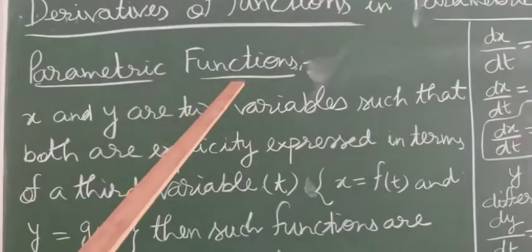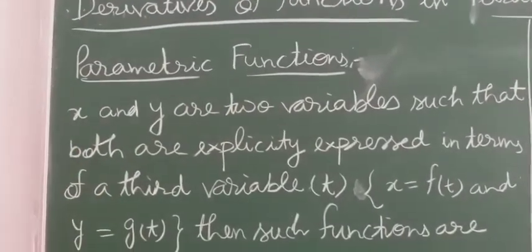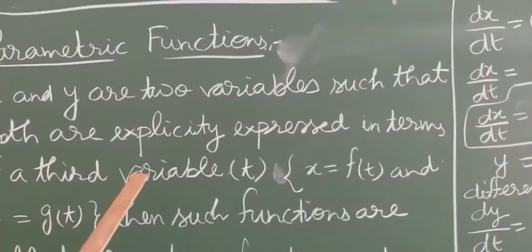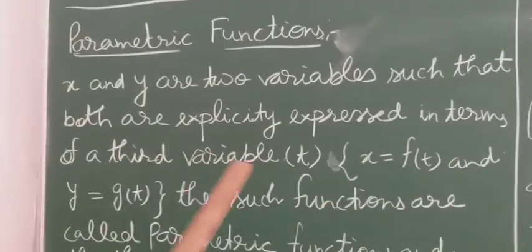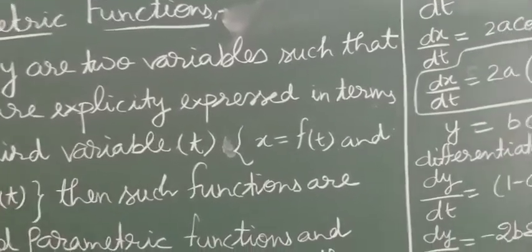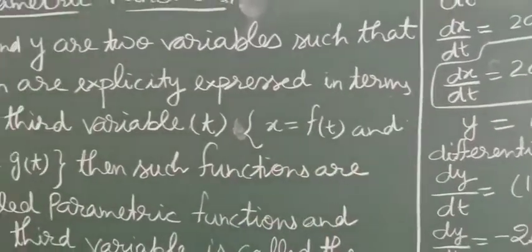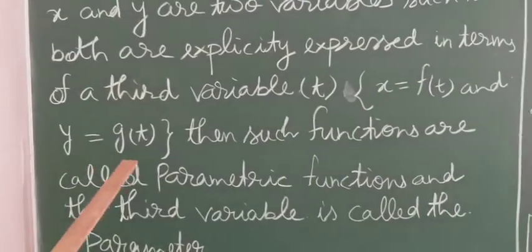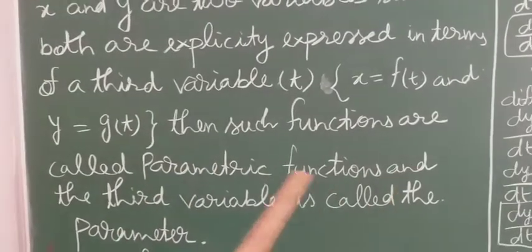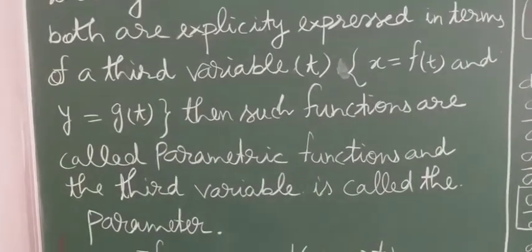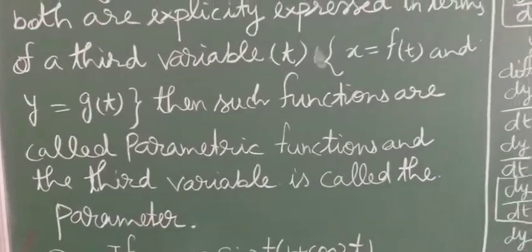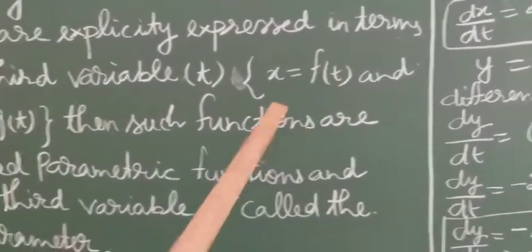A parametric function is when there are two main variables, x and y, and both are explicitly expressed in terms of a third variable. For example, x equals f(t) and y equals g(t). Such functions are called parametric functions, and the third variable t is called the parameter.